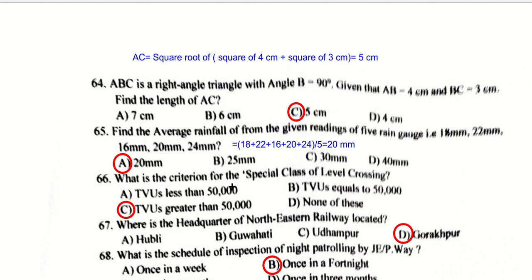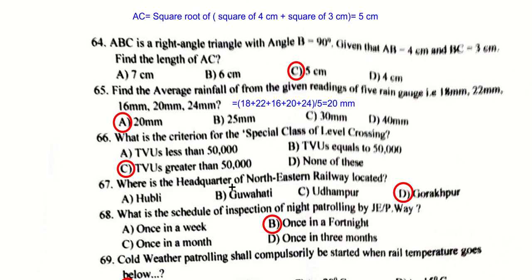To find the average rainfall from five readings, sum all numbers and divide by the count: (18 + 22 + 16 + 20 + 24) ÷ 5 = 20 mm. The criteria for special class of level crossing is TGV greater than 50,000.